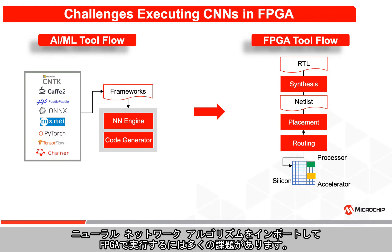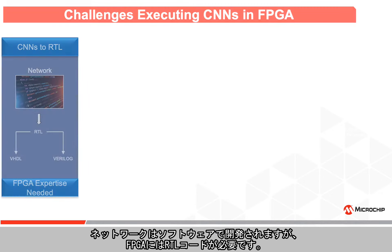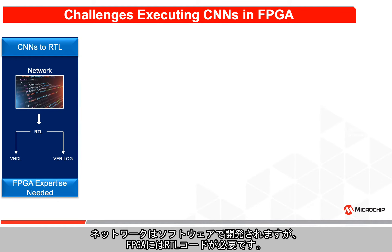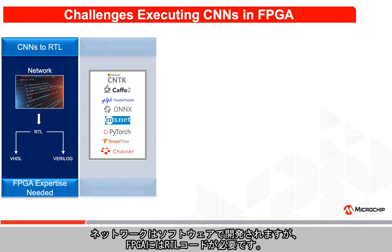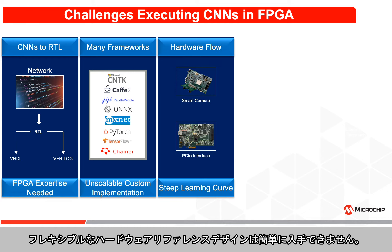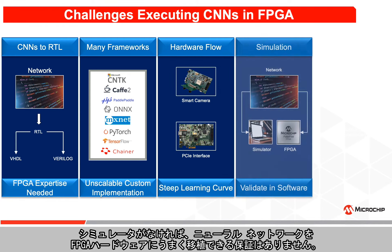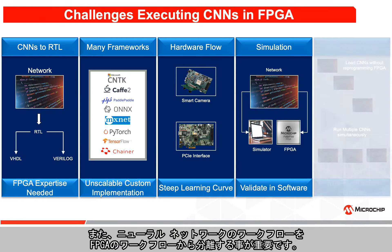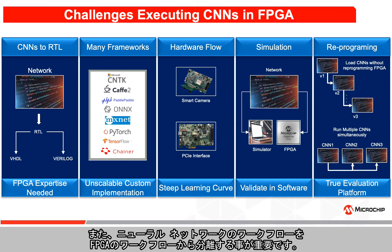There are many challenges in porting neural network algorithms to run on FPGAs. Networks are developed in software, whereas FPGAs require RTL code. They are trained using many popular frameworks which make custom RTL implementation difficult. Flexible hardware reference designs are not easily available. Without a simulator, there is no guarantee that a neural network will successfully port to FPGA hardware. Finally, dissociating the neural network workflow from the FPGA workflow is important.